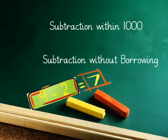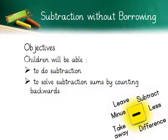Subtraction within thousand — this is the third chapter of the mathematics textbook for grade 2. Today we will do subtraction. The objectives for today's lesson are: children will be able to do subtraction and solve subtraction sums by counting backwards.